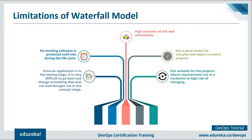No working software is produced until late in the lifecycle. There is high risk and uncertainty - if your product goes live and there's a bug or downtime, you have to go through the entire source code and the whole waterfall process again. Rolling back to a previous stable version after a bad software stack upgrade also took a lot of time. It is also not suitable for projects where requirements are at moderate to high risk of changing.